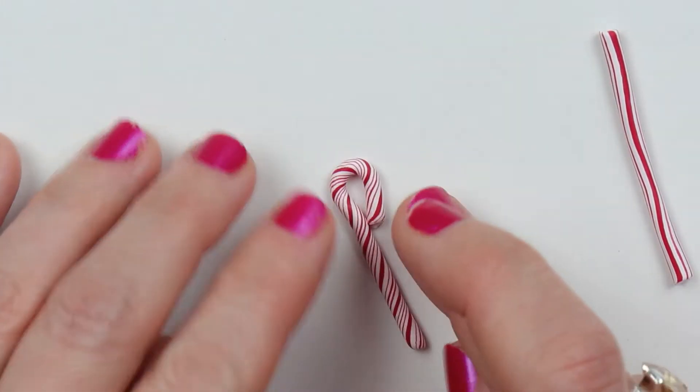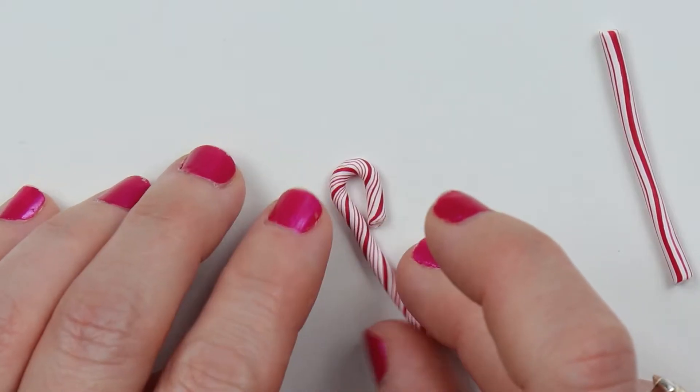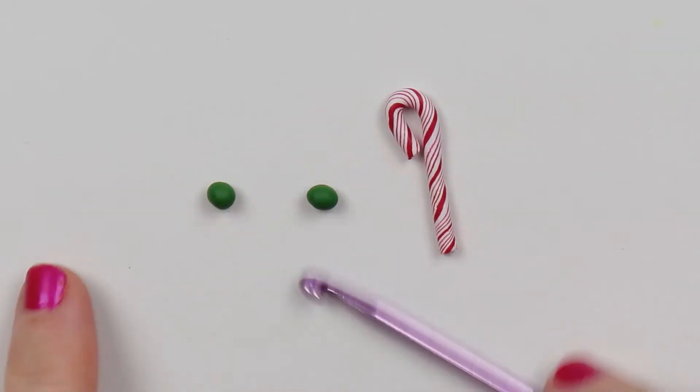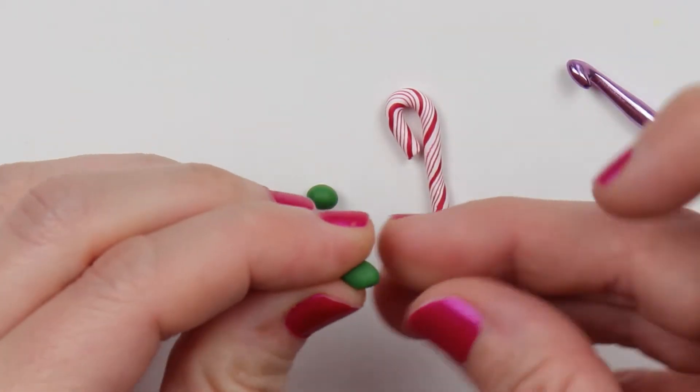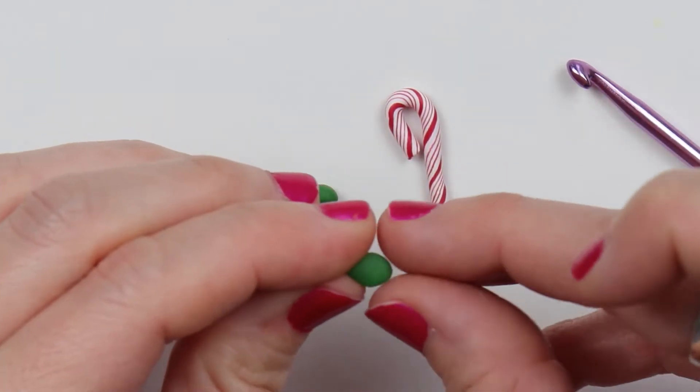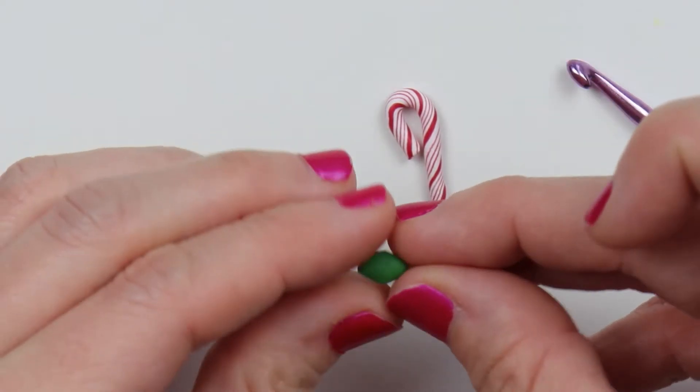And just do the same with the second one. And then I will use two balls of green clay. With each of them, I will just make it into a diamond shape by pinching each of the ends into a point.